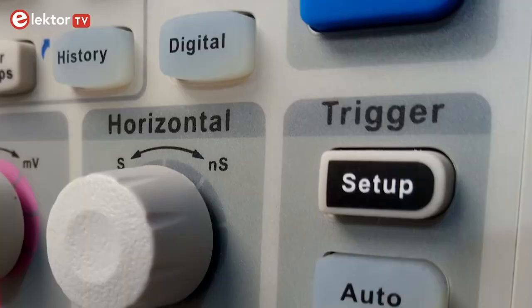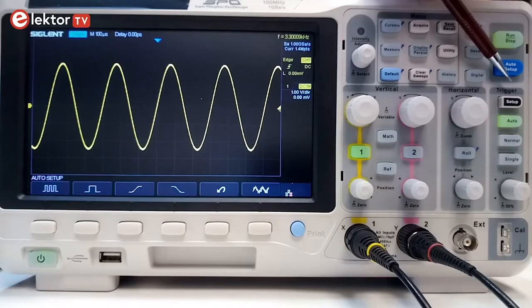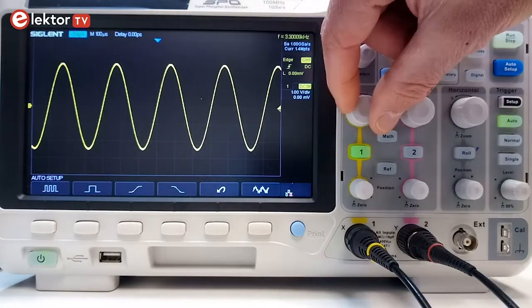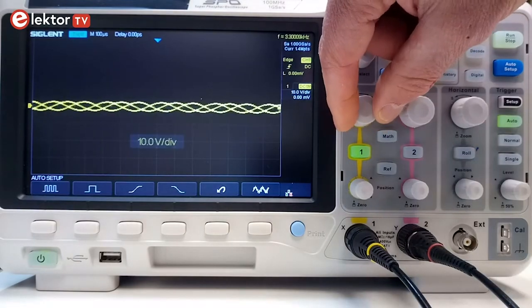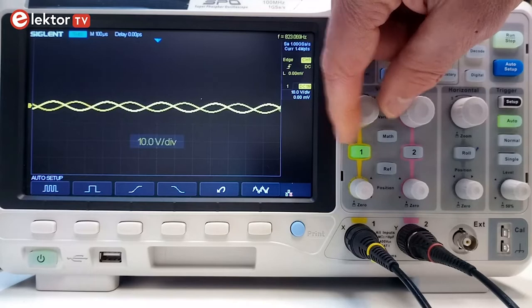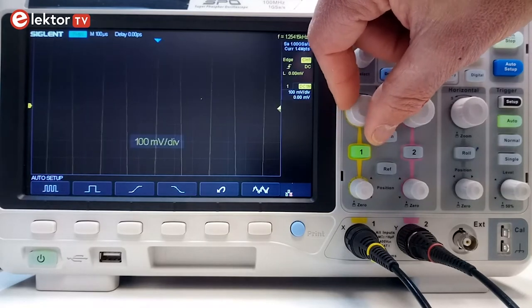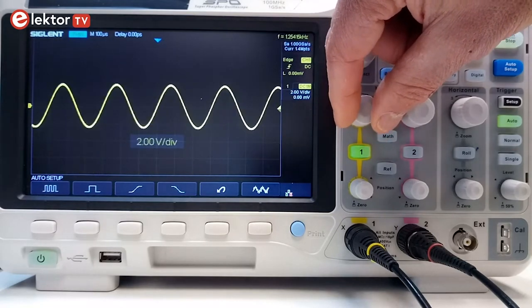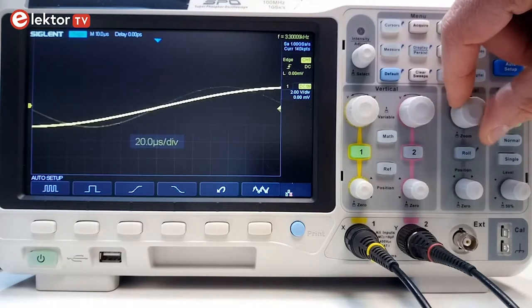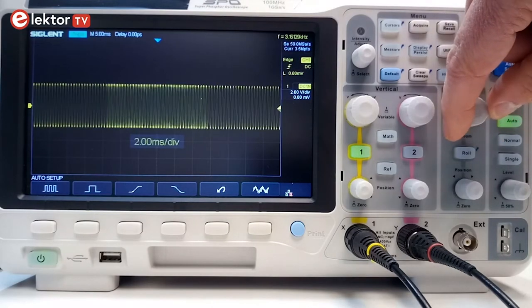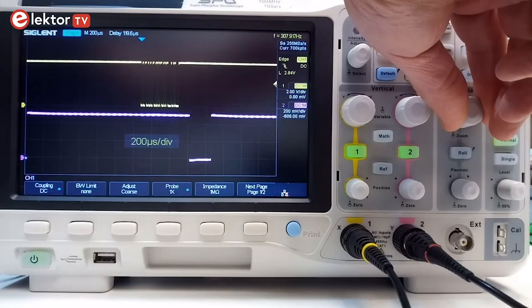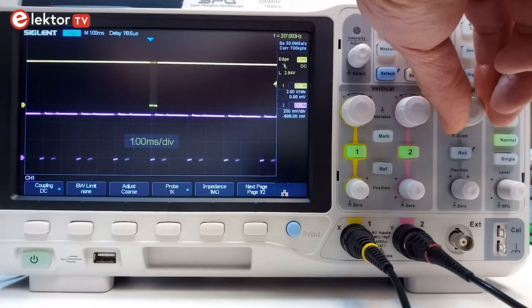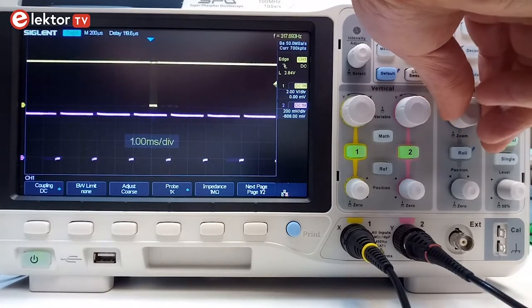Then there is a third section called trigger. This is probably the most important section, as it determines how and when a signal is shown. Often it is easy enough to get the signal you are measuring to fit on the screen by adjusting the horizontal and vertical axis. But making the oscilloscope display the part of the signal you are interested in can be much more difficult. The trigger section gives you control over this, and it is therefore important to understand what it does and how.